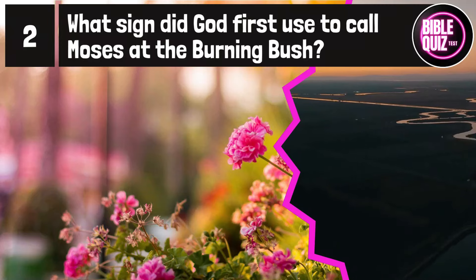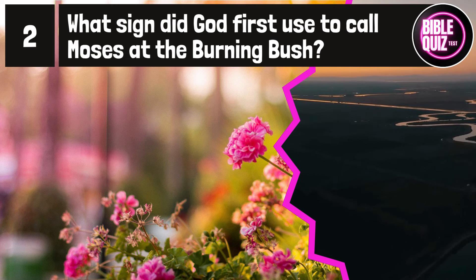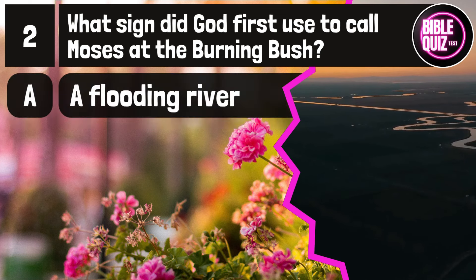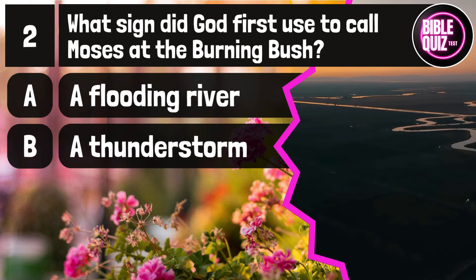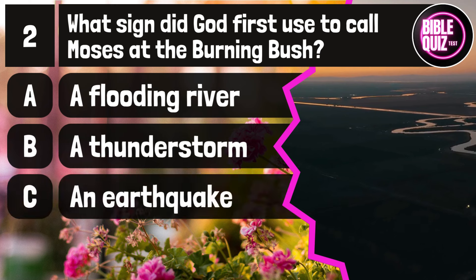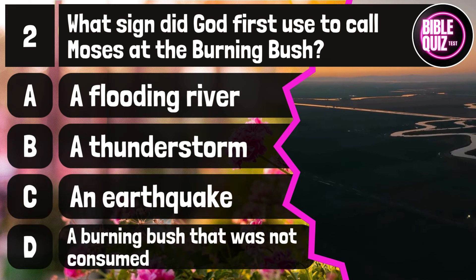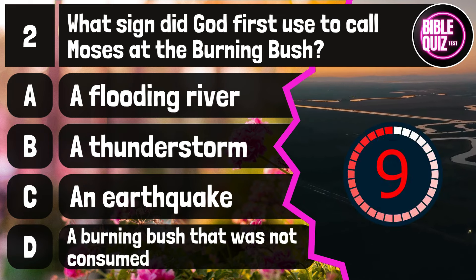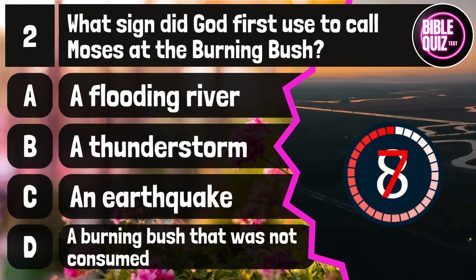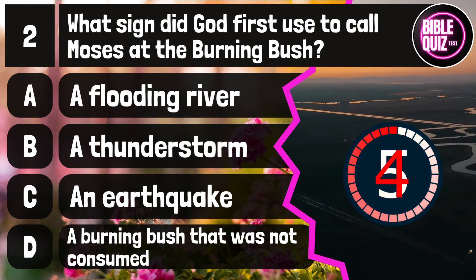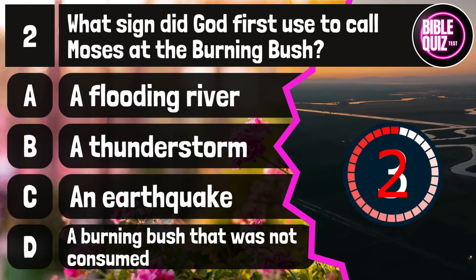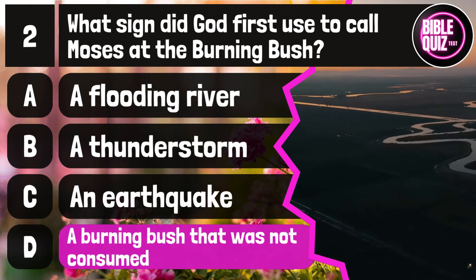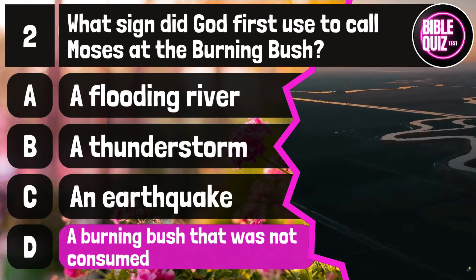Question number 2. What sign did God first use to call Moses at the burning bush? Option A: A flooding river. Option B: A thunderstorm. Option C: An earthquake. Option D: A burning bush that was not consumed. Time to think. The answer is option D: A burning bush that was not consumed.